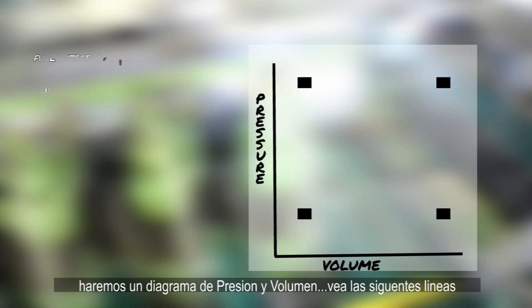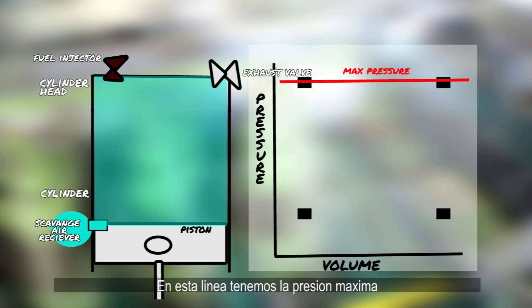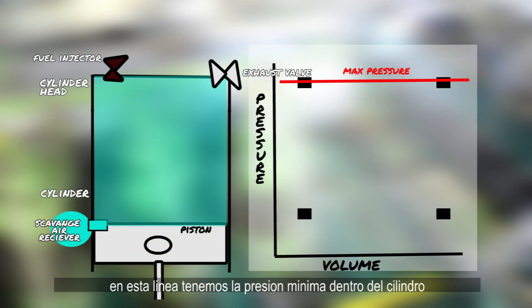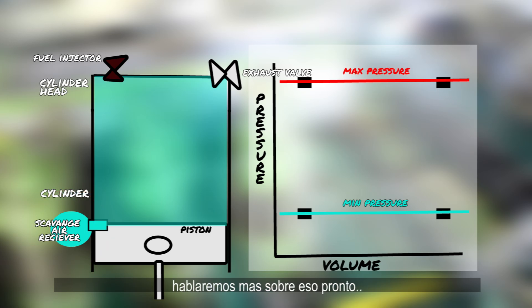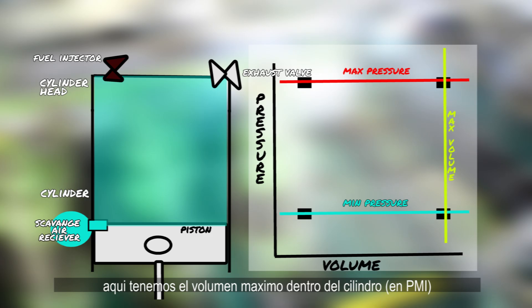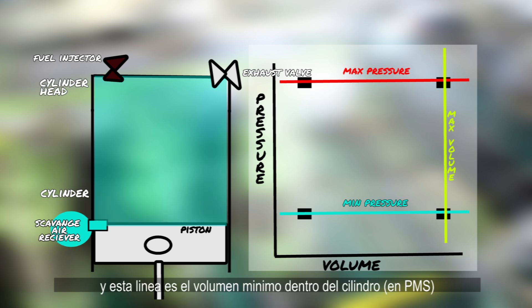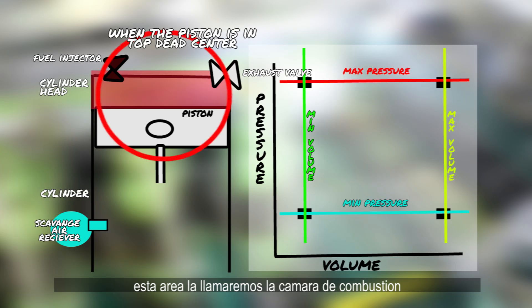With all this clear, let's review one diesel combustion cycle like we did on the four-stroke video, but this time with the two-stroke marine engine. Let's make our pressure-volume diagram. Check out these lines. In this line, we have maximum pressure — this is when the combustion happens. In this line, we have the minimum pressure inside the cylinder, which at all times should at least be scavenge air pressure. Here, we have the maximum volume inside the cylinder, and this line is the minimum volume inside the cylinder. This area we'll call the combustion chamber.